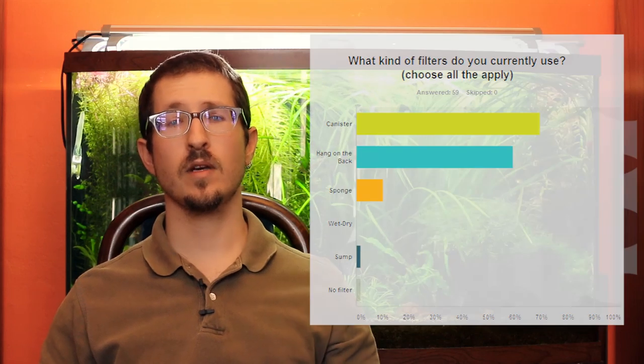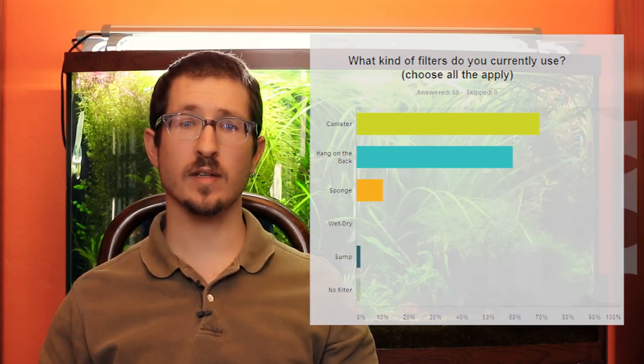But here's the real benefit of doing the polls. In the last video, I asked you about the kinds of filters that you guys run on your tanks. And to that question of what filters are you currently running, 70% said canisters, about 60% said hang on the backs, and 10% said sponges, and that's because people have multiple tanks, multiple filters, etc.